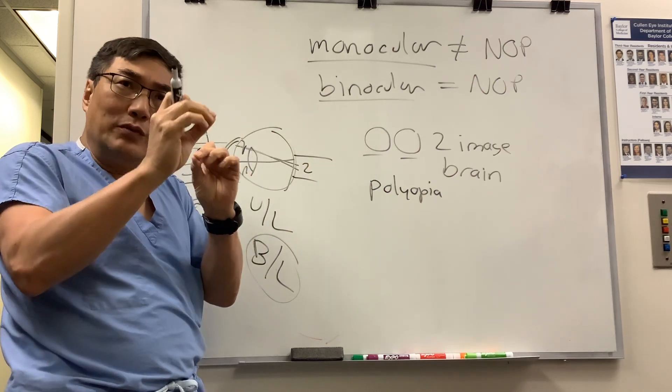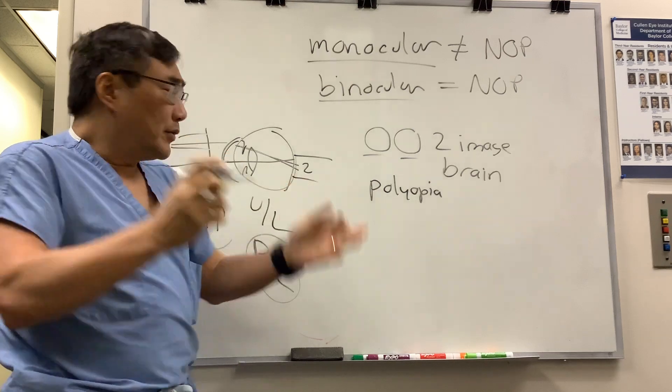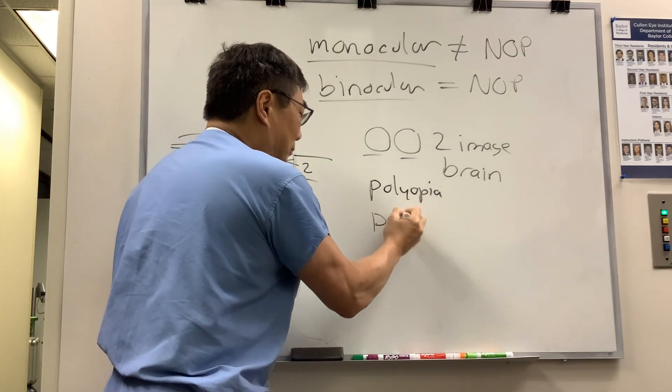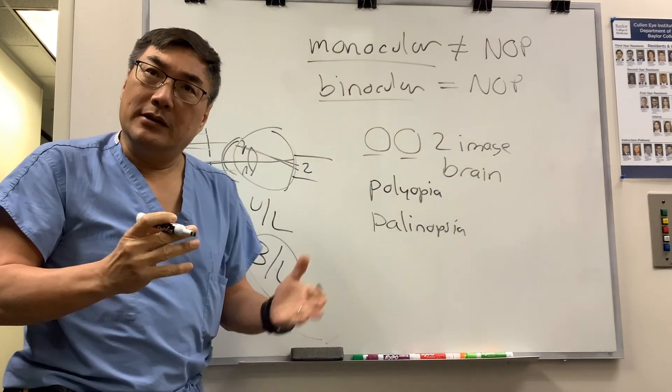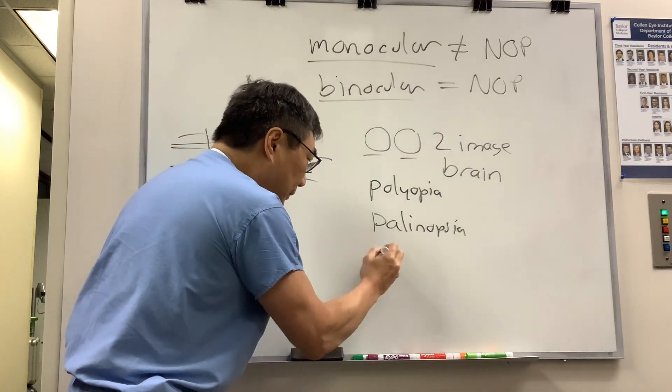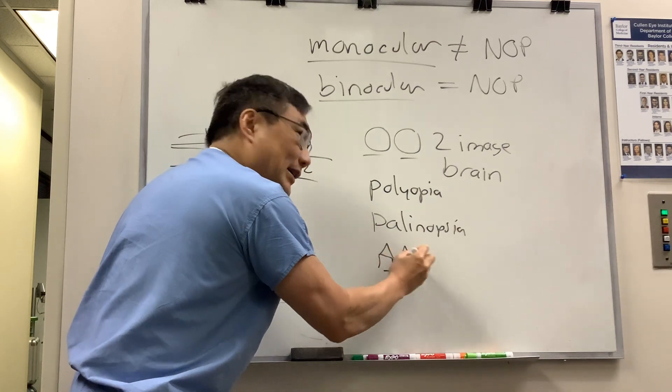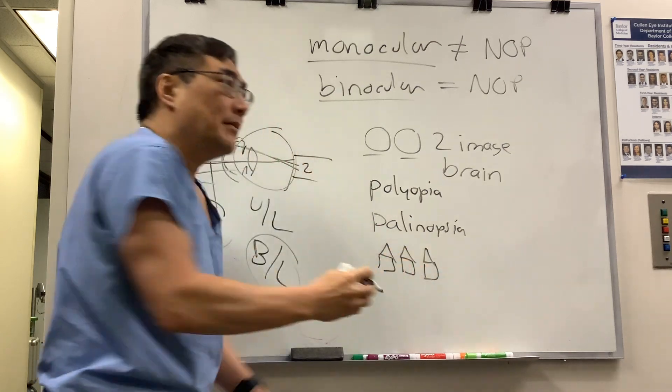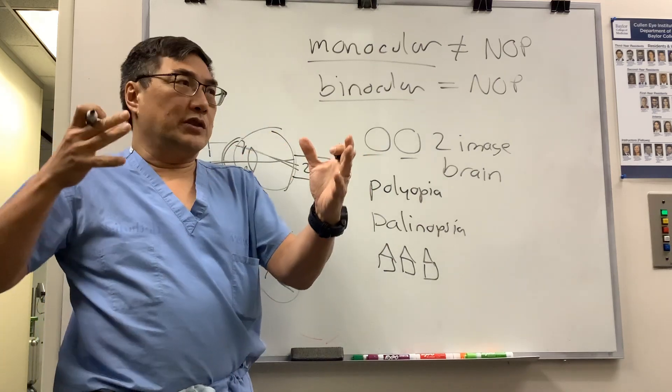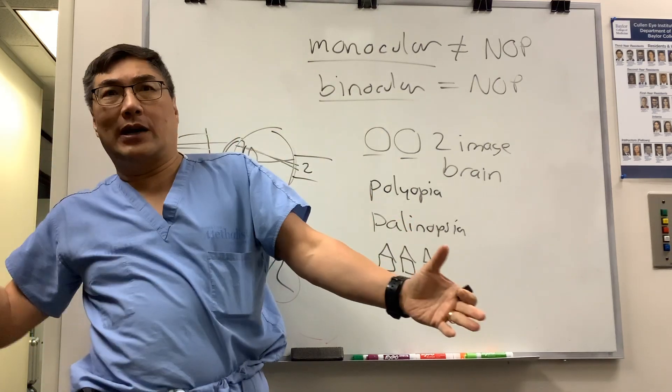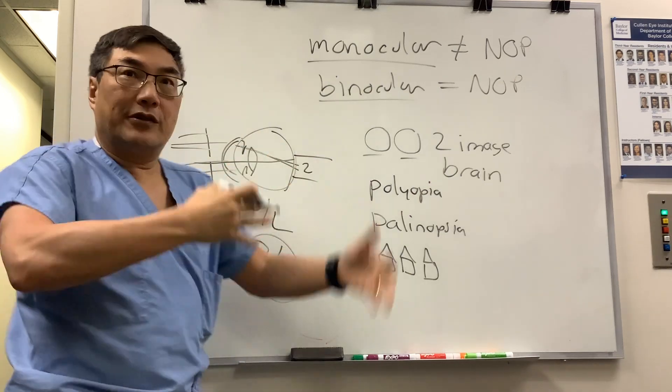One thing that can make two images is if it's a repeating image. That's called palynopsia. So you see one image, the house, and then see the house again, and then the house again, because you're unable to release that image. It's supposed to go into short-term memory and then purge out, but you see the image over and over and over again.